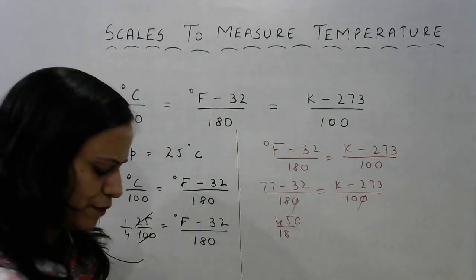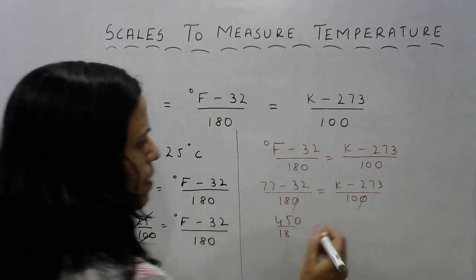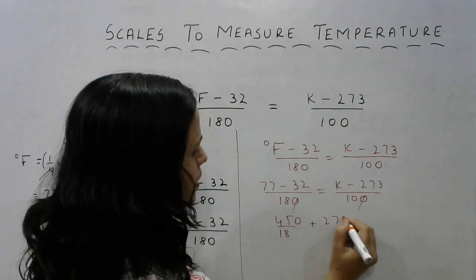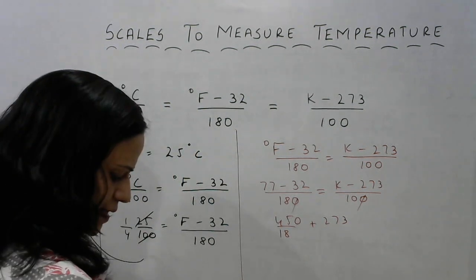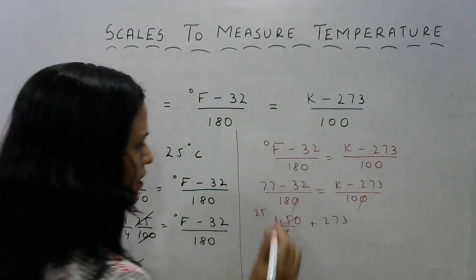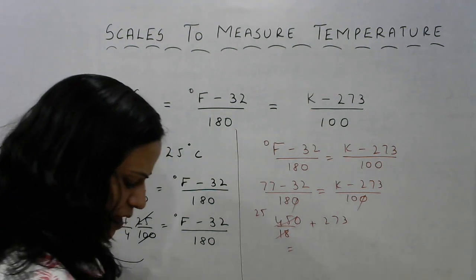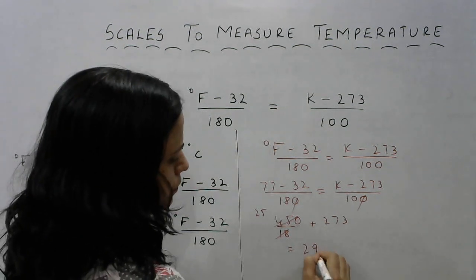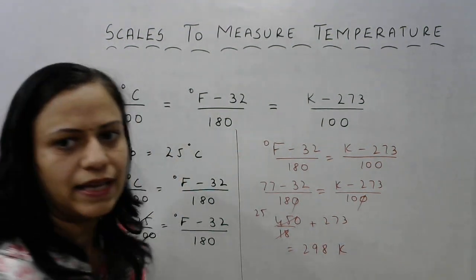This 10 goes in the numerator. This becomes 450 plus 273. Simplify this. So when you cancel this out, you get 25 here. So 25 plus 273 gives you 298 Kelvin.